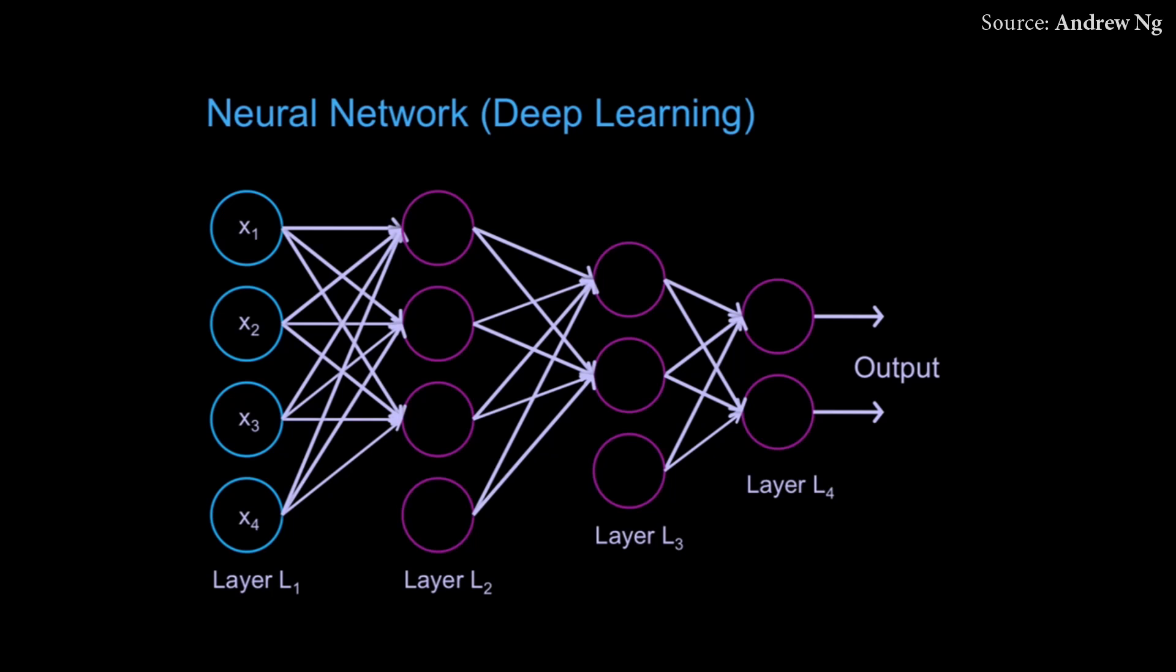After we have given many inputs to the neural network, in its hidden layers it will learn to figure out a way to recognize different classes of inputs, such as horses, people, or school buses.